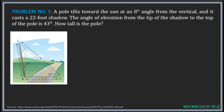An illustration is already provided here. I'll explain how this illustration was derived. The pole tilts toward the sun at an angle of 8 degrees with respect to the vertical — it tilts closer to the sun. So the angle formed between the vertical line and the pole is 8 degrees. Then the pole casts a shadow of 22 feet.